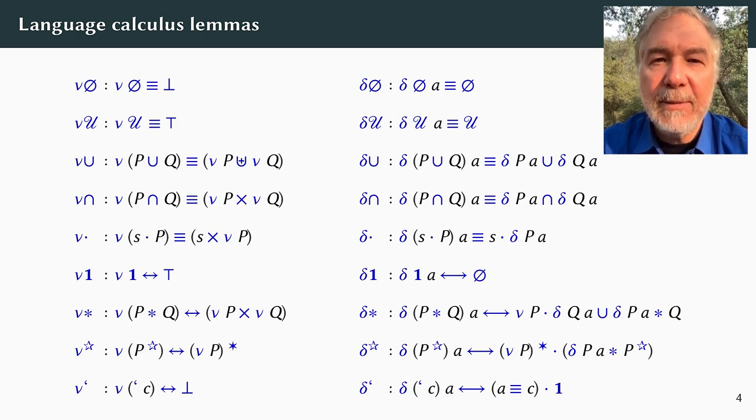The style of these lemmas is significant. Each one reduces Nu or Delta of a standard language construction to Nu and or Delta of simpler constructions. The computable implementations that follow and their full correctness are corollaries of these lemmas.